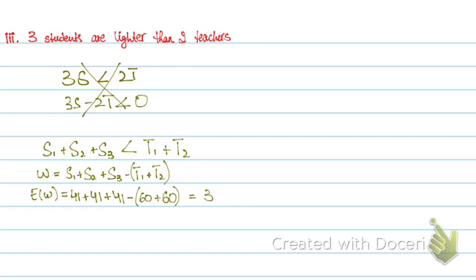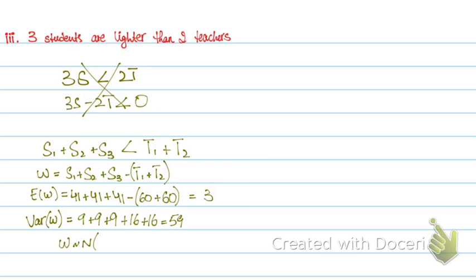Now for the variance — the coefficient for each variable is 1. So this will simply be 9 plus 9 plus 9 for the students, plus 16 plus 16 for the teachers, which equals 59. So W follows a normal distribution with mean 3 and variance 59.